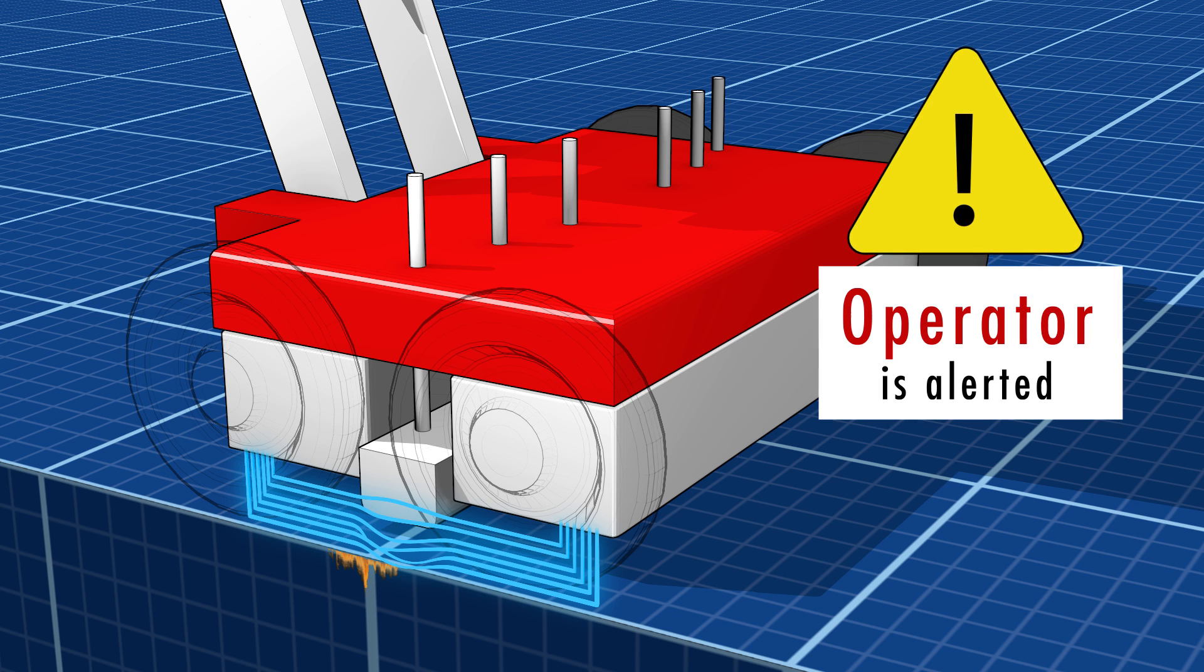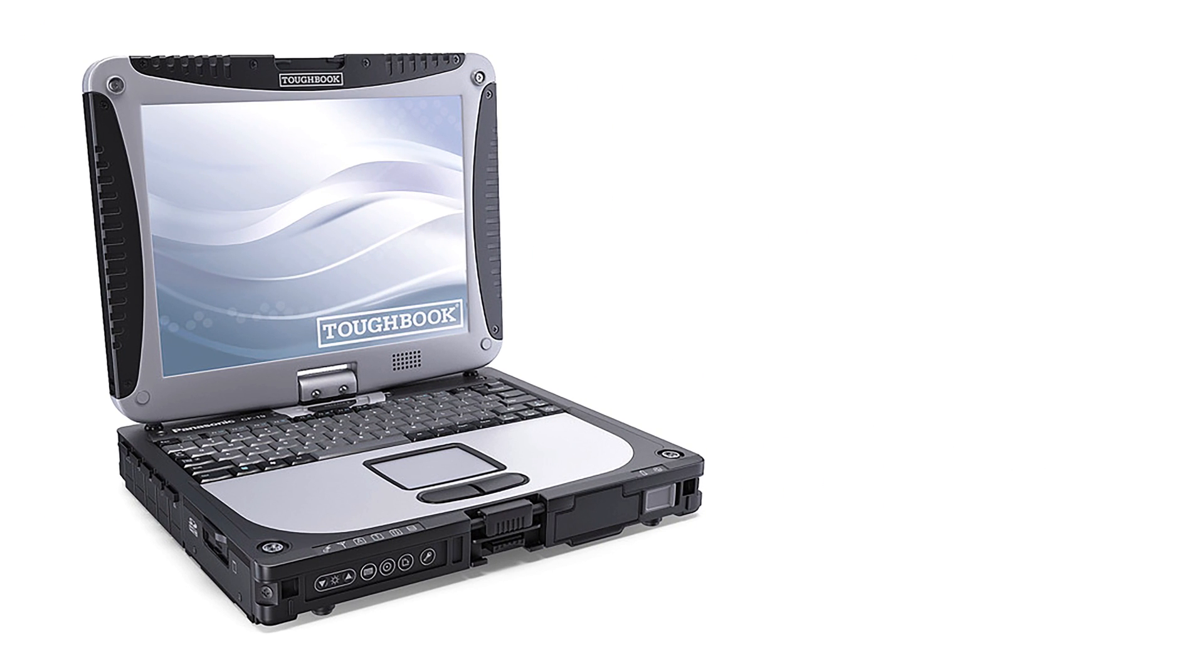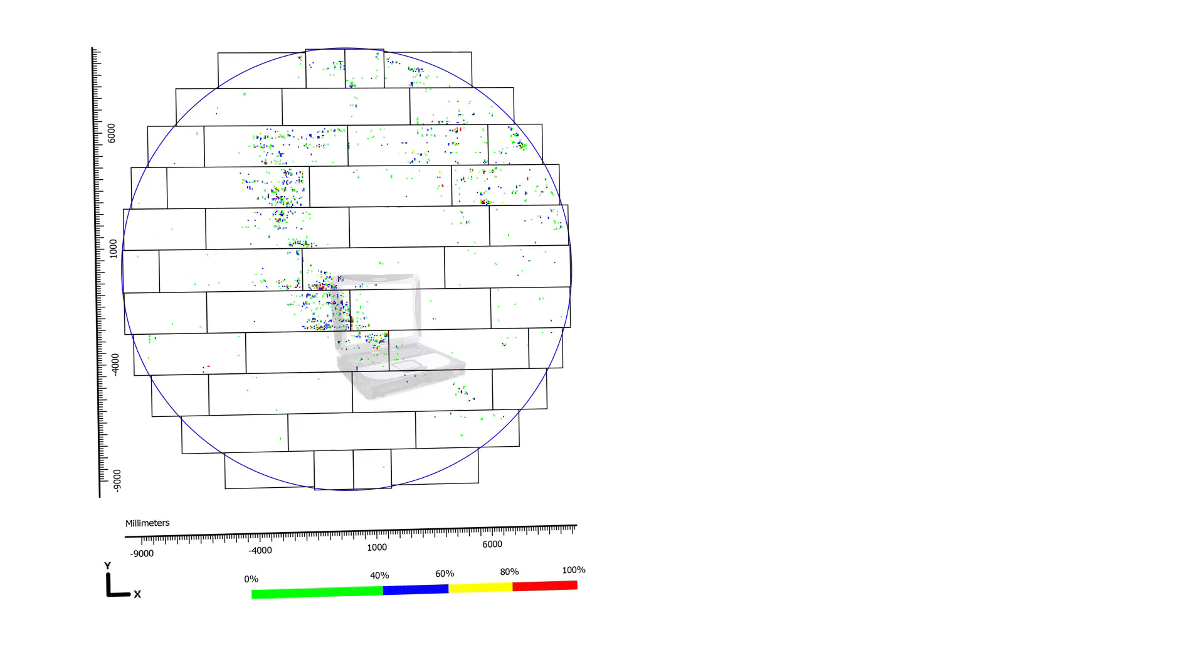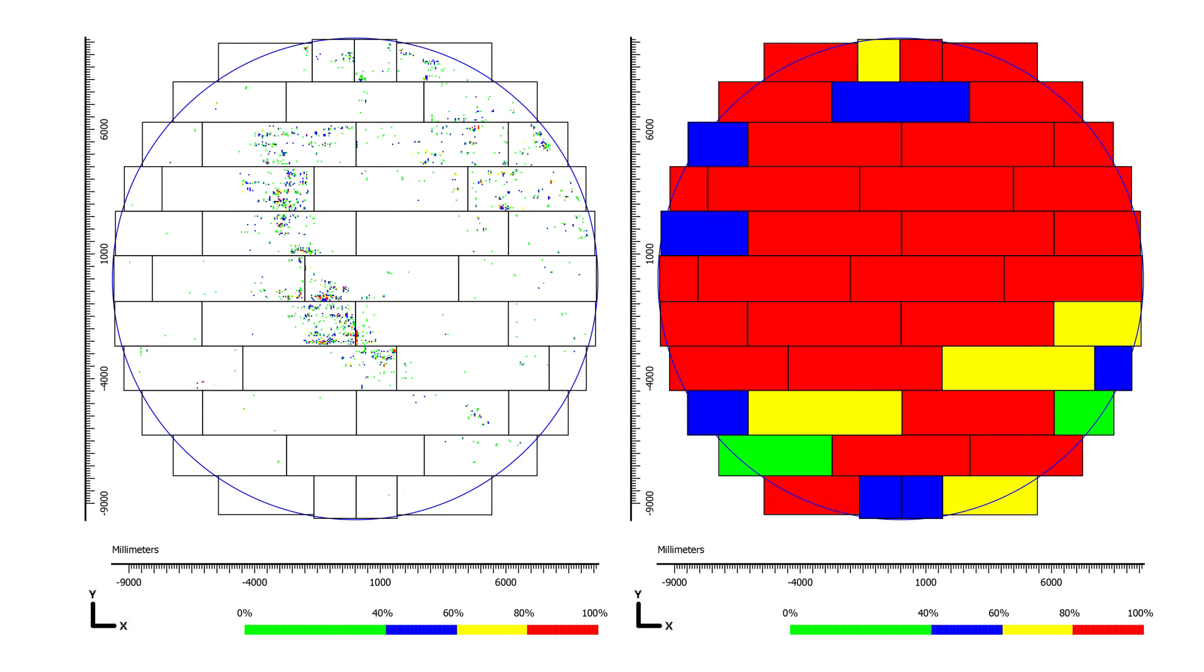The signals from the sensors relay the inspection data to a laptop for additional processing. Here, advanced software allows the operator to create a visual representation of the scanned area by overlaying the inspection data over tank and pipeline schematics. This creates a map of the overall material integrity using color-coded indicators to show severity of volume losses.